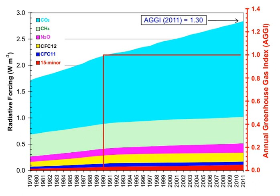The atmospheric concentration of water vapor is highly variable and depends largely on temperature, from less than 0.01% in extremely cold regions up to 3% by mass in saturated air at about 32 degrees Celsius. The average residence time of a water molecule in the atmosphere is only about 9 days, compared to years or centuries for other greenhouse gases such as CH4 and CO2. Thus, water vapor responds to and amplifies effects of the other greenhouse gases.